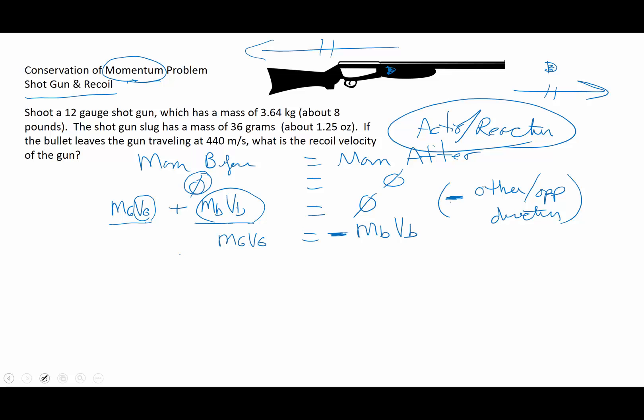So let's put some numbers in. I am solving for the velocity of the gun. So the velocity of the gun will be mass of the bullet times velocity of the bullet divided by mass of the gun. So the mass of the bullet is 36 grams, so that's going to be 0.036 kilograms. Velocity of the bullet is about 440 meters per second. And when I made up this problem, I tried to make the numbers sort of realistic around about an eight pound shotgun. And the mass of the gun is 3.64 kilograms.